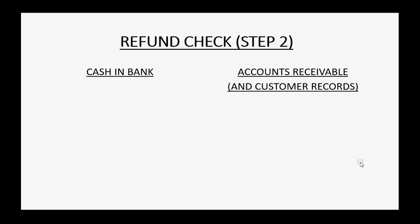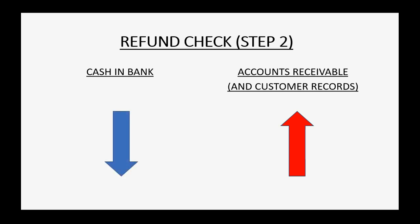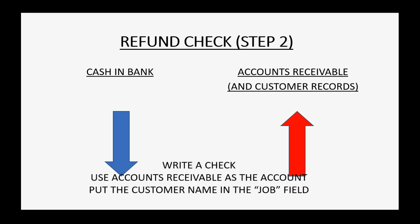In step two, we're going to write a refund check for that credit memo. Accounts receivable will actually increase, because accounts receivable would normally decrease when we get money from a customer — so when we pay money to a customer, accounts receivable temporarily goes up. Cash and bank goes down because we're writing a check to the customer. When we write the check, we use the accounts receivable account as the account we're paying to, and we put the customer name in the job field.